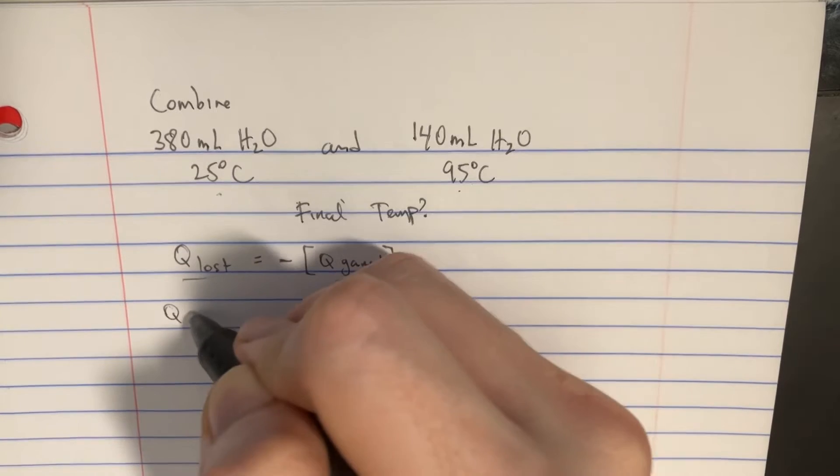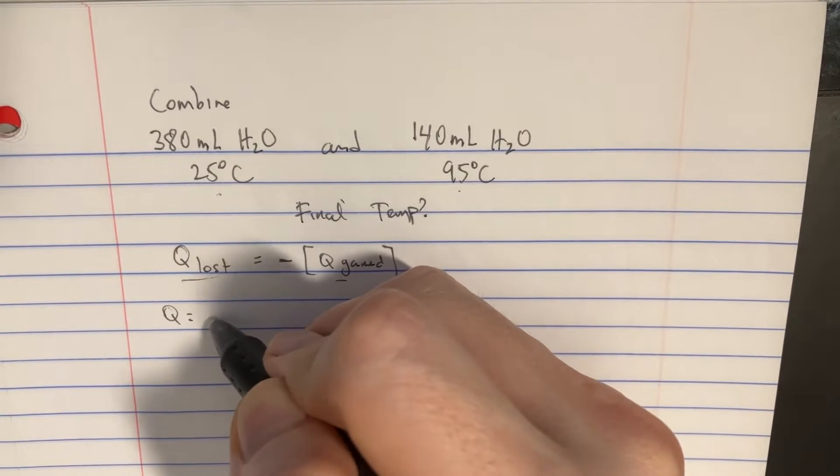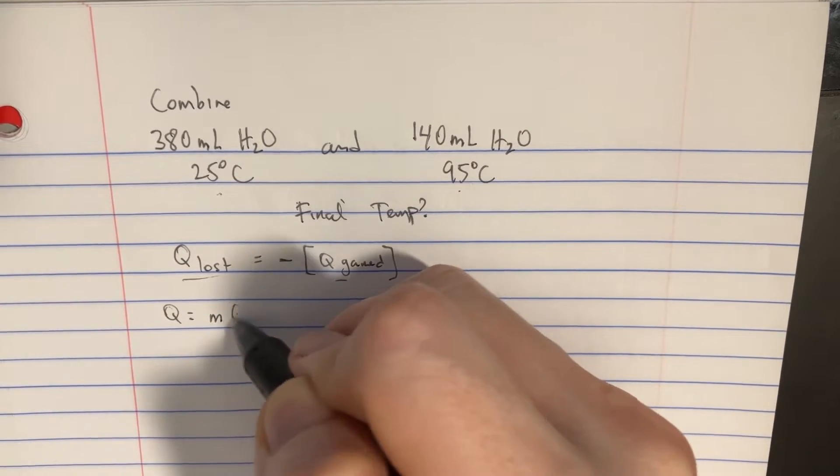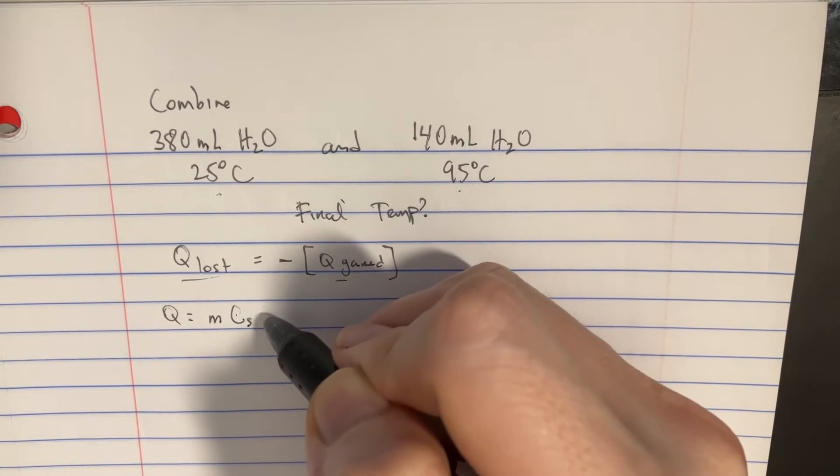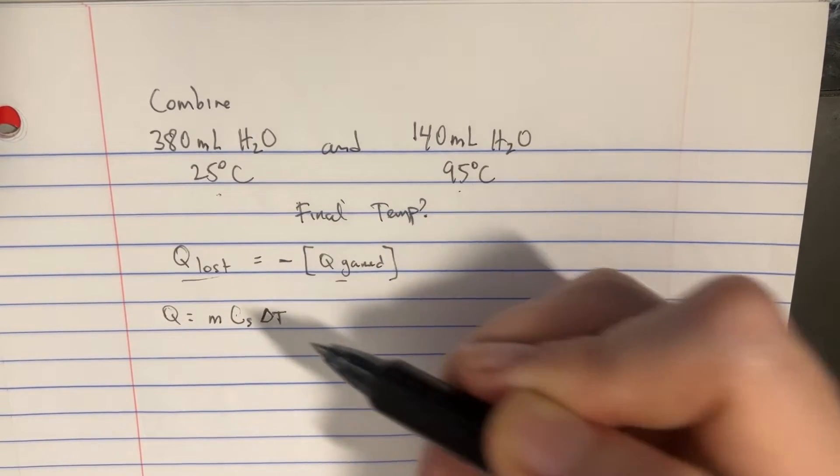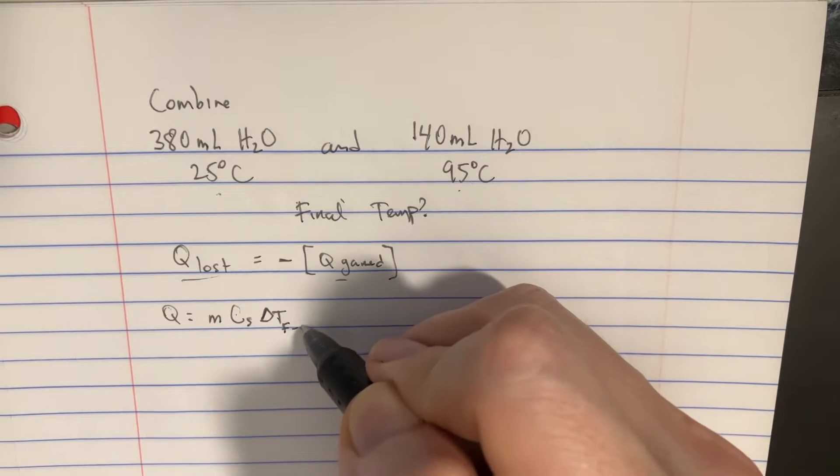Q is normally going to be mass times the specific heat capacity times the change in temperature. And this is supposed to be F minus I.